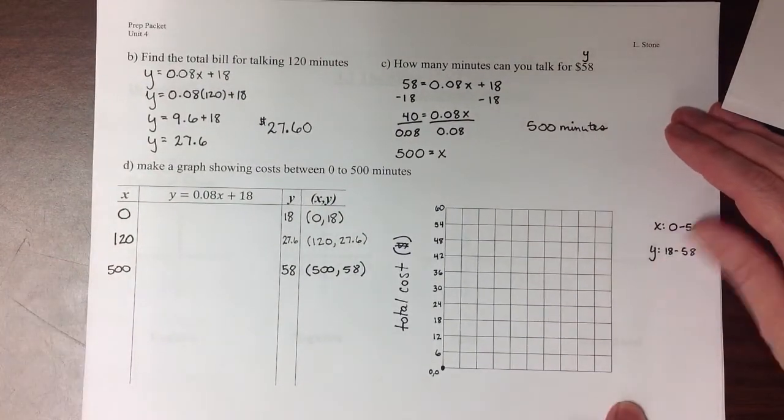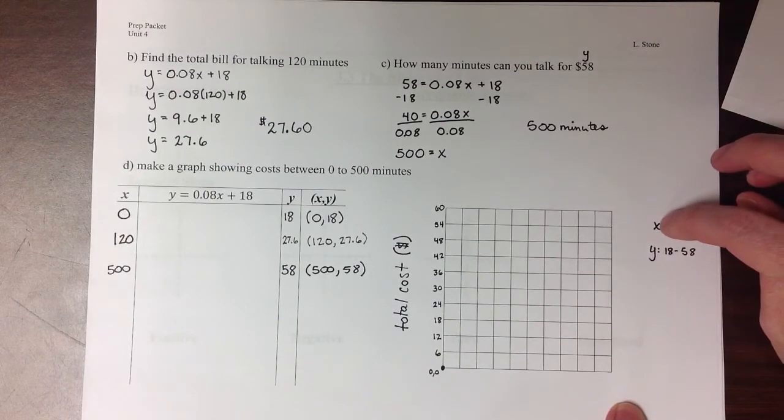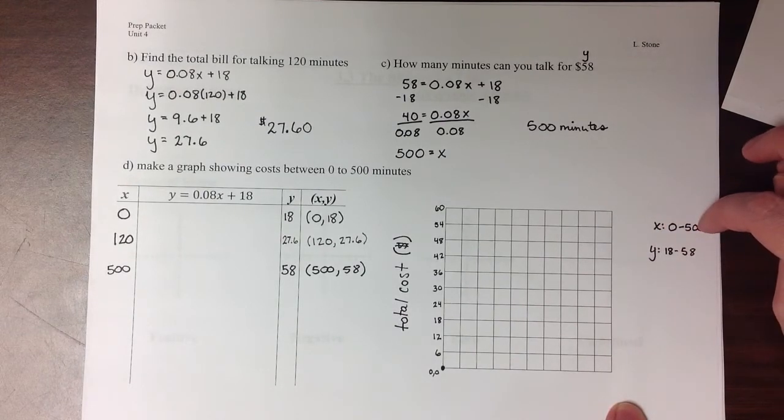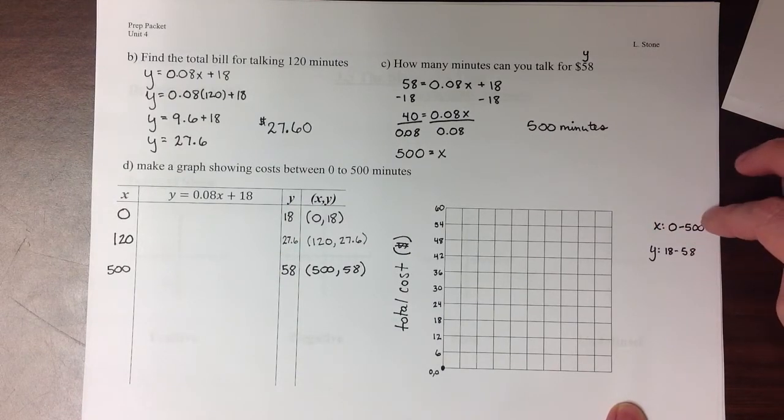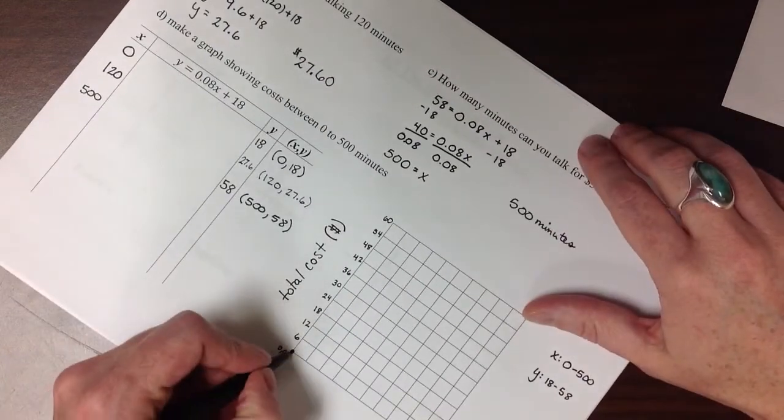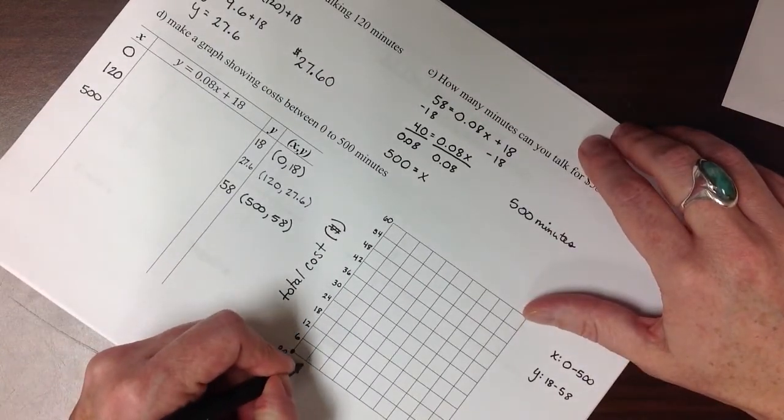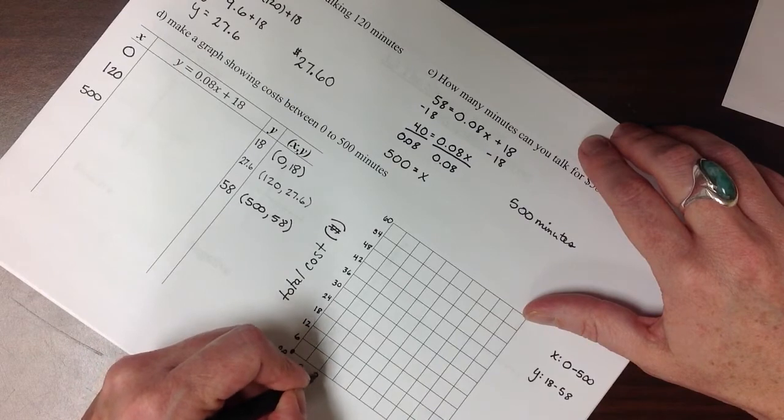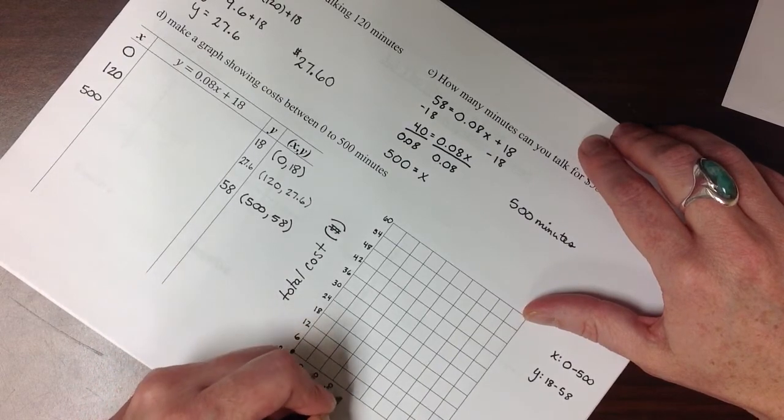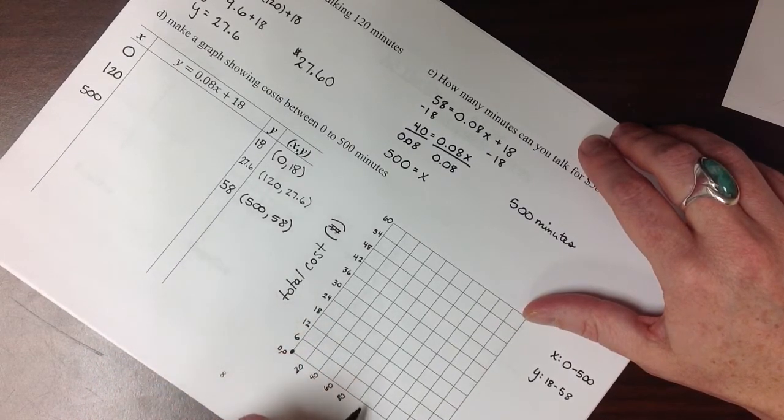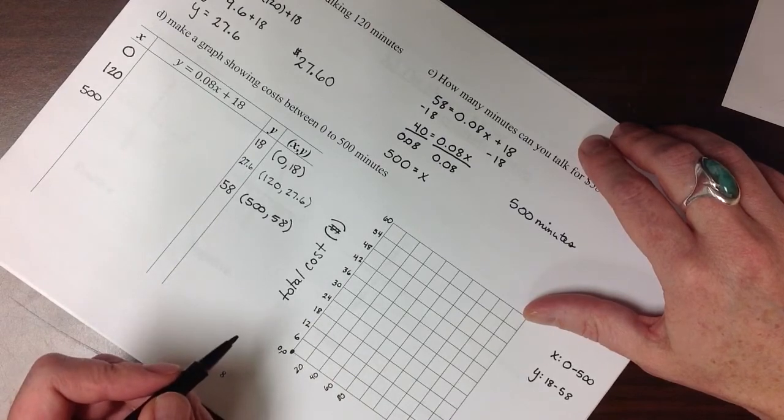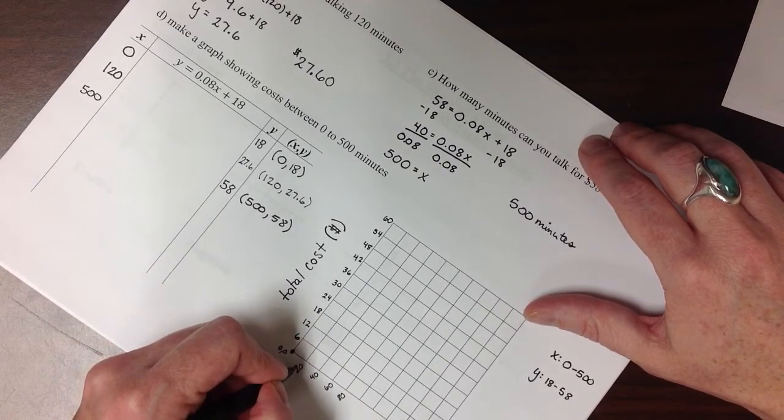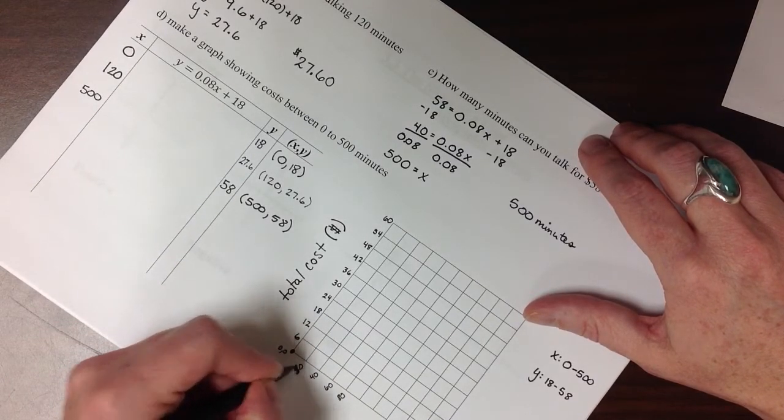Then down here on the x-axis, I need to be able to get from 0 to 500. So it looks like I'll need to count by 20s to fit that span. So if this is the point (0, 0), this is going to be my 20, 40, 60, 80, ooh, no, not by 20s, by 50s. Try that again. 50, 100.